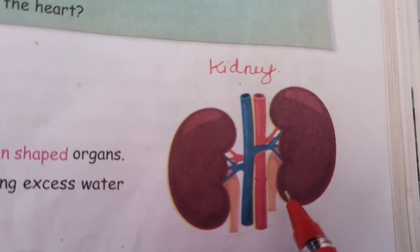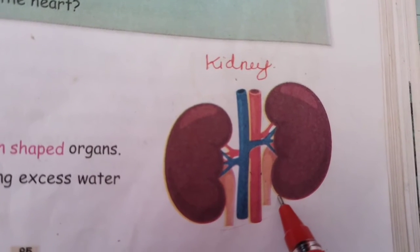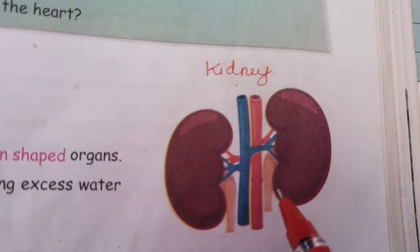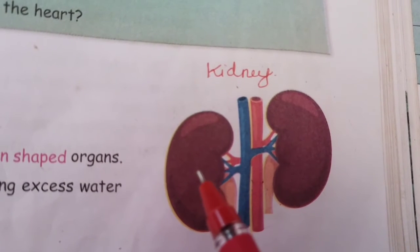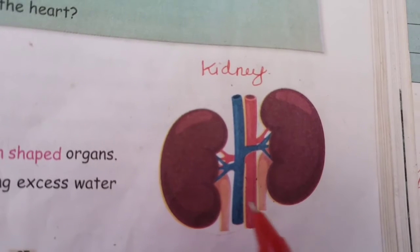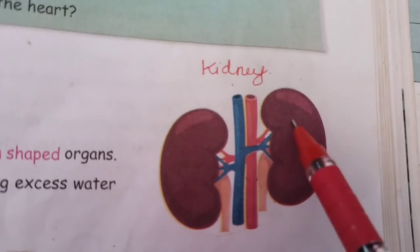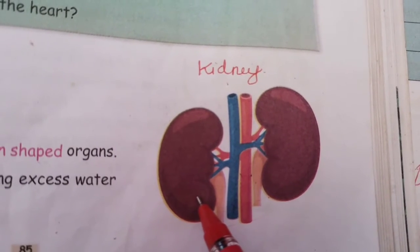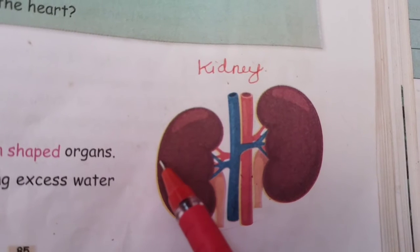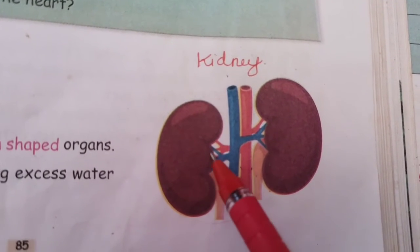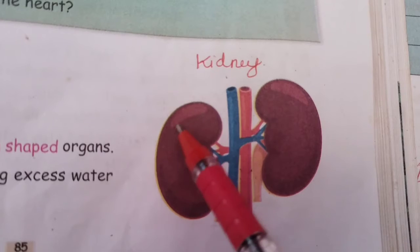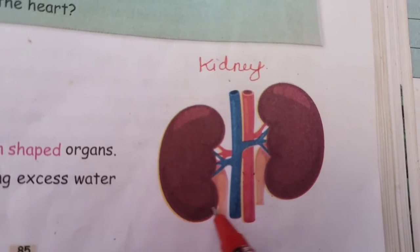We have two kidneys — a pair of kidneys. Now see the shape of the kidneys. Each kidney looks like a bean seed.